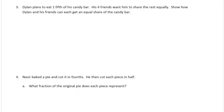Dylan plans to eat one-fifth of his candy bar. His four friends want him to share the rest equally. Show how Dylan and his friends can each get an equal share of the candy bar. Well, if he wants to eat a fifth and he's got four friends, there's five of them all together, right? So he needs five equal pieces for his candy bar.